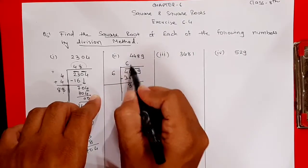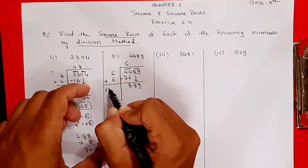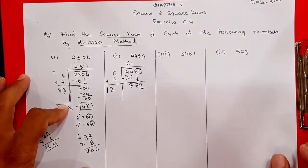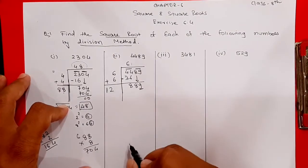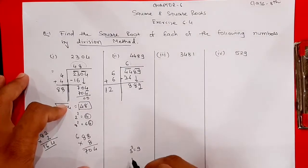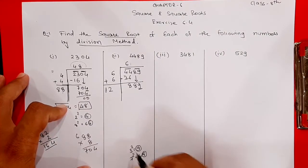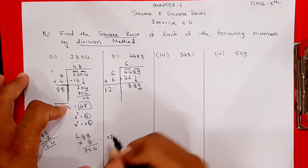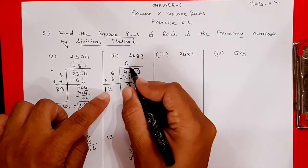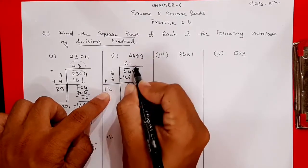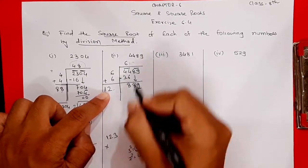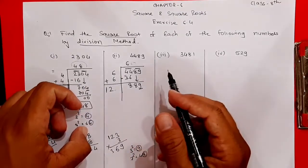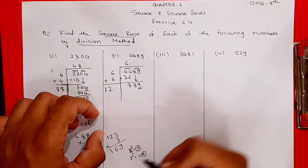Now add 6 + 6 = 12. Check the last digit — it is 9. Nine appears at the end of squares of 3 and 7: 3²=9 and 7²=49, both end in 9. So the next digit is either 3 or 7. First try placing 3: number becomes 123, multiply 123 × 3 = 369. But we need 889, so 3 won't work.